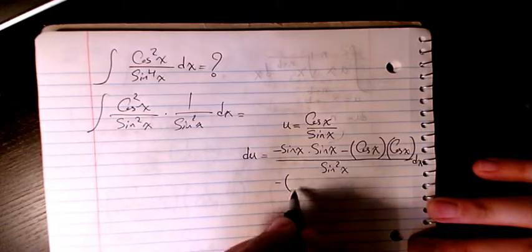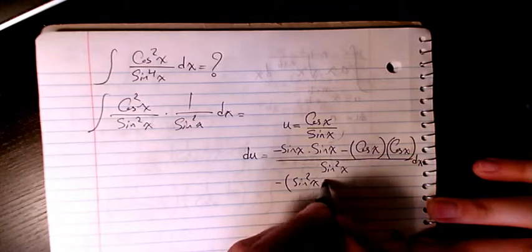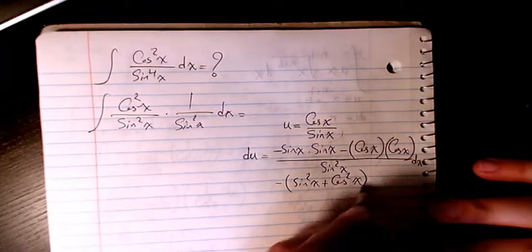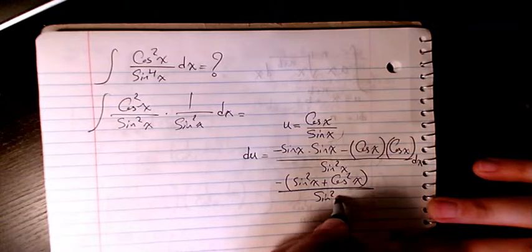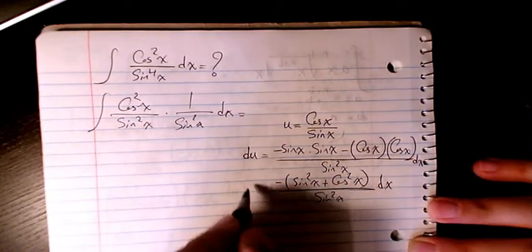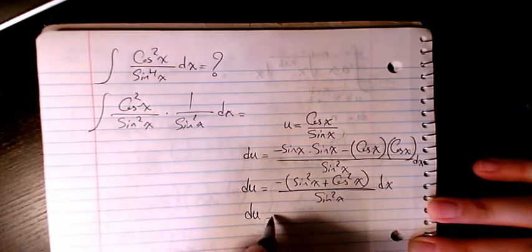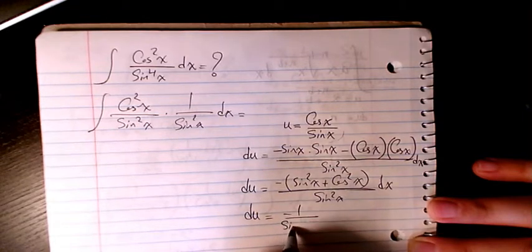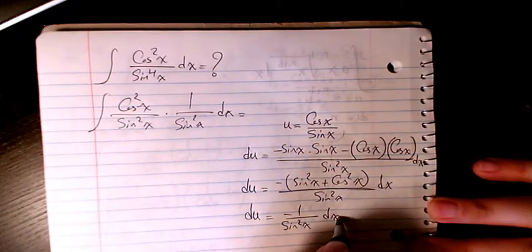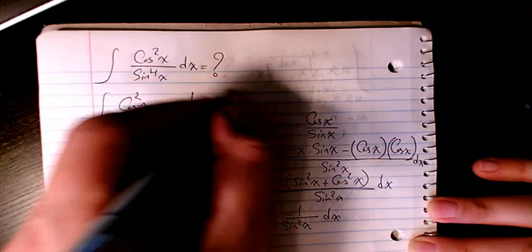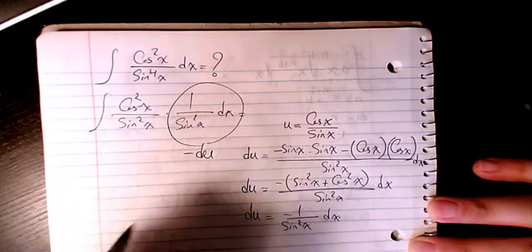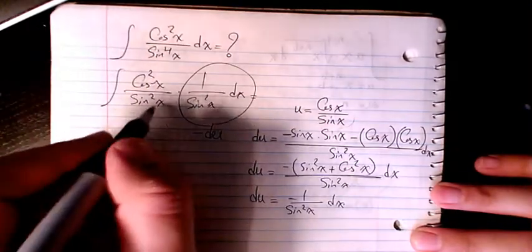So it's going to be negative sine squared x plus cosine squared x, and I factor this negative, divided by sine squared x dx. So it will be negative one over sine squared x dx. So this part is negative du.